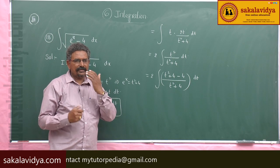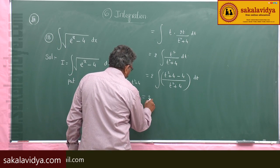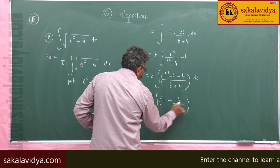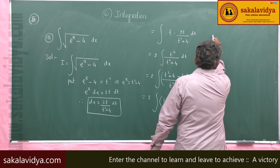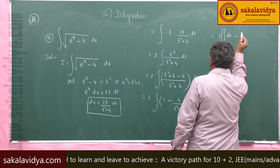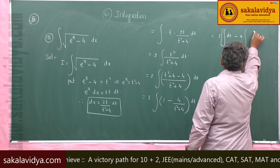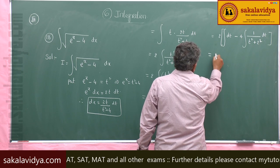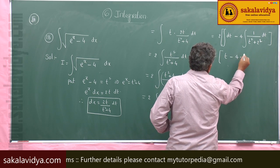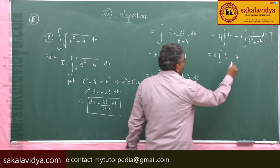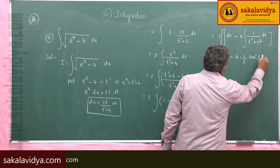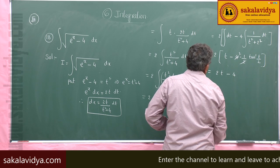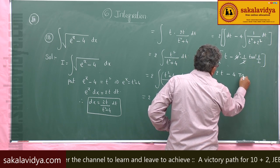Splitting the fraction: 2 times integral of (1 minus 4 by (t squared plus 4)) dt. This equals 2 times integral dt minus 4 times integral of 1 by (t squared plus 2 squared) dt. Evaluating: 2t minus 4 times (1 by 2) tan inverse (t by 2), which gives 2t minus 4 tan inverse (t by 2).